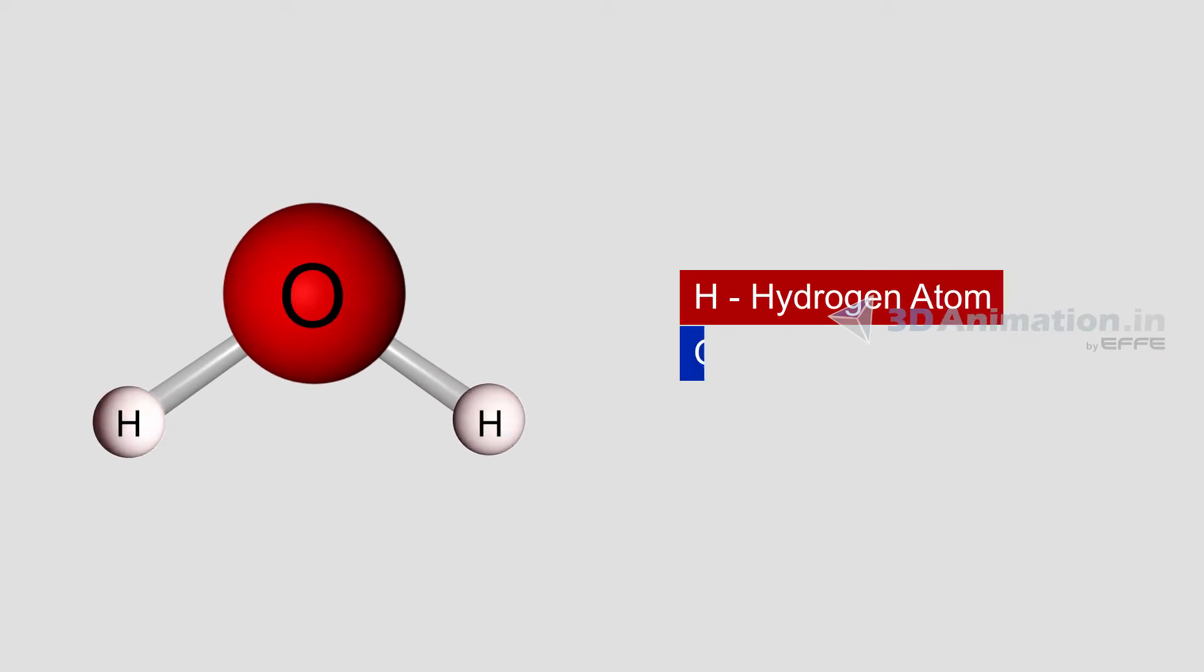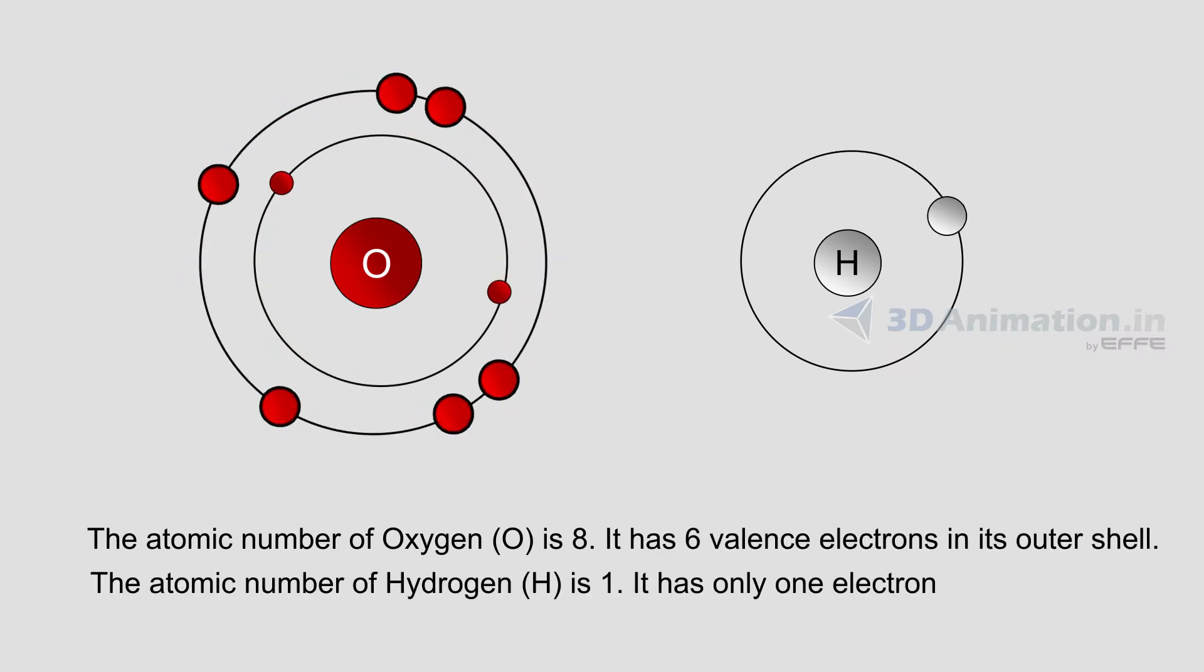Water molecule is composed of two hydrogen atoms and one oxygen atom. The atomic number of oxygen is eight. It has six valence electrons in its outer shell.